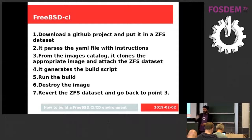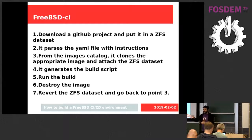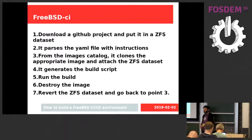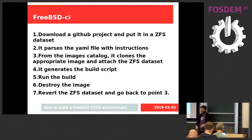I want to build in an isolated environment, so obviously I want to use jails. But I don't want to create jails just to build once and then destroy everything. The idea is to have a catalog of images that the tool can just clone, run the build, and then destroy. There's this image catalog — we'll speak about it more later. It will be cloned, the project dataset will be attached, and then everything is ready to generate the build script, run the build, and tear down by destroying the image.